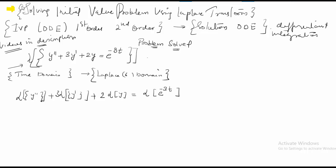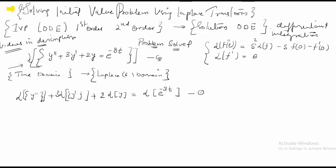This gives us our first equation. Based on the previous lecture, the Laplace of the second derivative f double-dash can be given as s squared times Laplace of f, minus s times f(0), minus f-dash(0). And the Laplace of f-dash is s times Laplace of f, minus f(0), where f is a function of t.